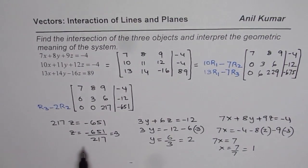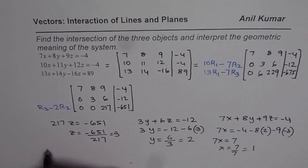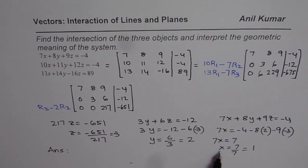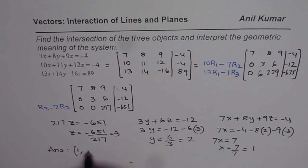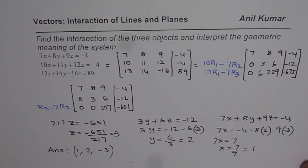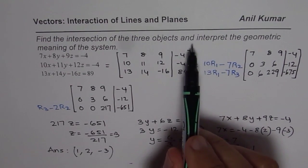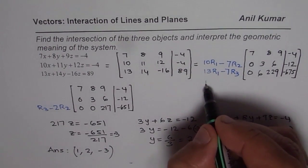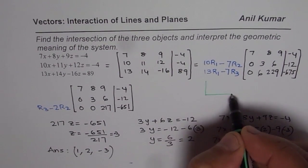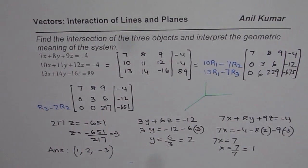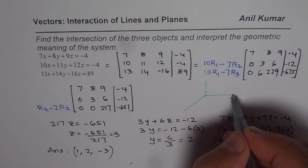So the solution gives us the coordinates of the intersection point X, Y, and Z. These three planes intersect at a single point, and the point coordinates are (1, 2, minus 3). That is how we find the point of intersection of the three planes.